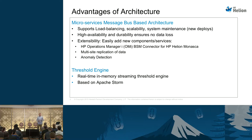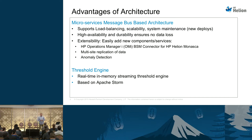The threshold engine is a real-time, in-memory streaming threshold engine. As it consumes metrics from the queue, it keeps them in memory for the entire time frame or window required — it doesn't go out and query another API or database when it needs to update those thresholds. We're updating thresholds once a minute as our default. We can send metrics into the system much faster than once a minute, but we evaluate thresholds on one-minute intervals. When we no longer need a metric, it just drops out of the window.